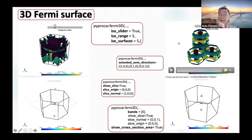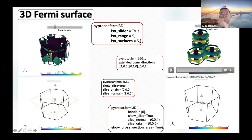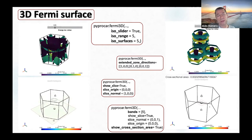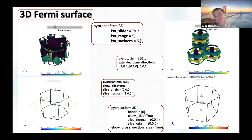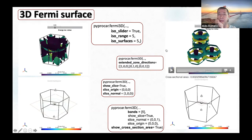We can also extend or replicate the Fermi surface in any direction. This is very useful because sometimes to get a good Fermi surface you need a very large k-mesh. Most codes require the calculation in the unit cell, but now you can do it in the primitive cell and then build the full unit cell by using this extension based on the symmetry of your crystal.